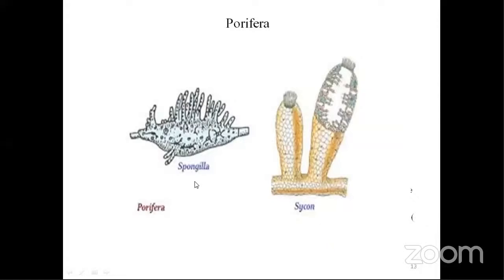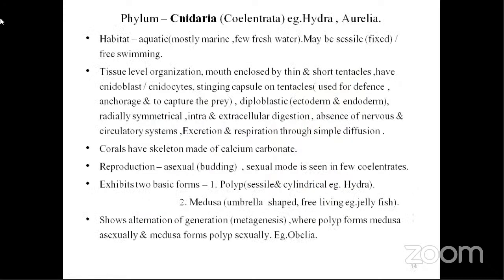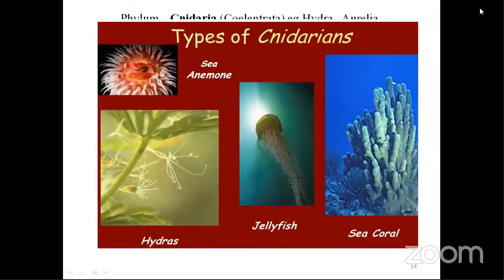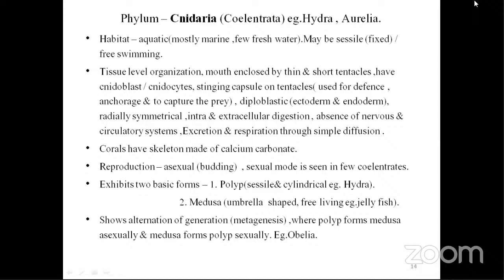Sycon and Spongilla are examples of Porifera. Next, Phylum Cnidaria. Their habitat is aquatic. Tissue level organization is present. The mouth is enclosed by thin and short tentacles — the stinging cells are called cnidoblasts or cnidocytes.